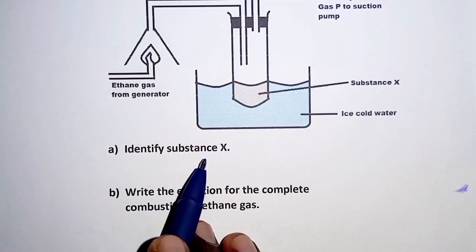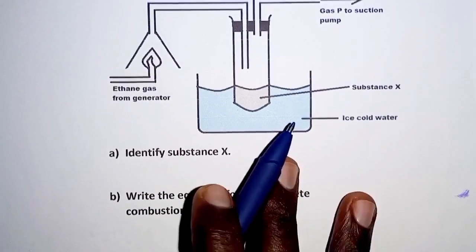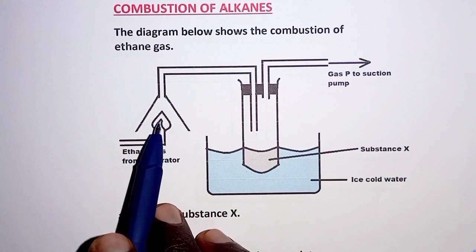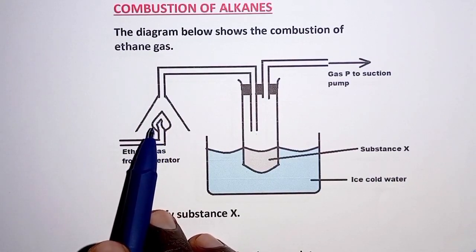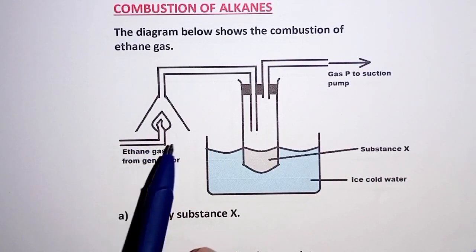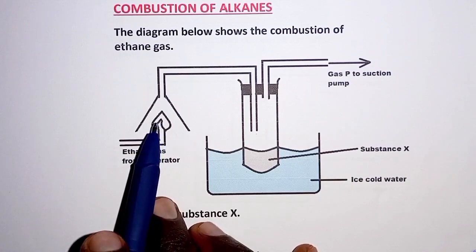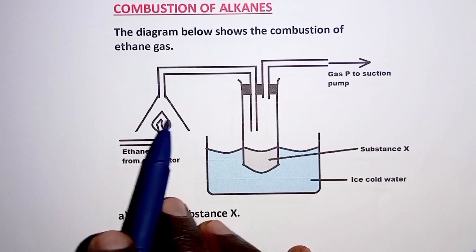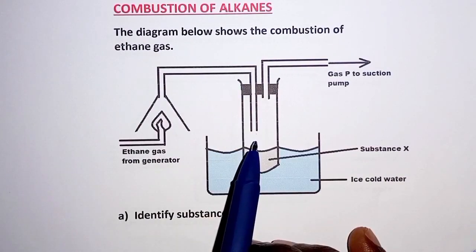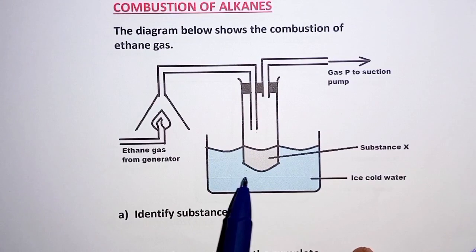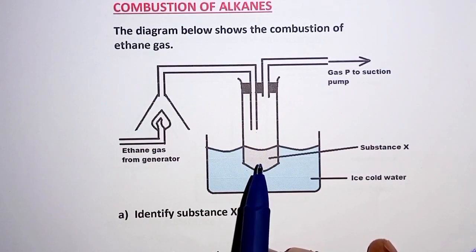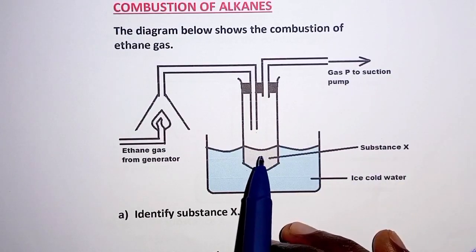Before we identify substance X, let's consider the following. In the diagram, we have ethane gas being burned. We recall that alkanes burn in oxygen to produce carbon dioxide and water. So ethane gas burning here produces water vapor and carbon dioxide. The water vapor travels to this tube, and with the help of ice-cold water, the water vapor condenses — meaning substance X is condensed water.